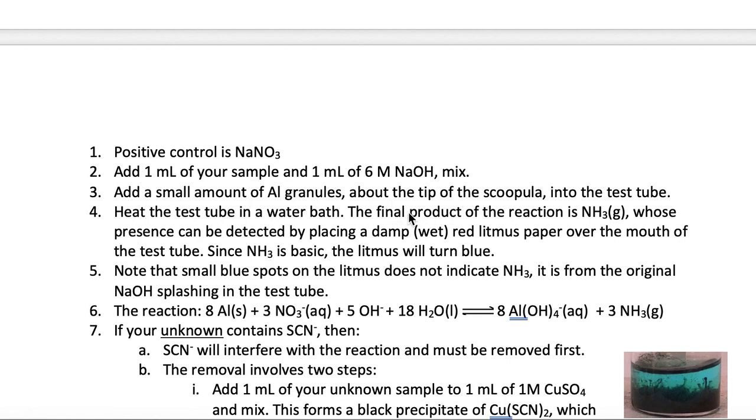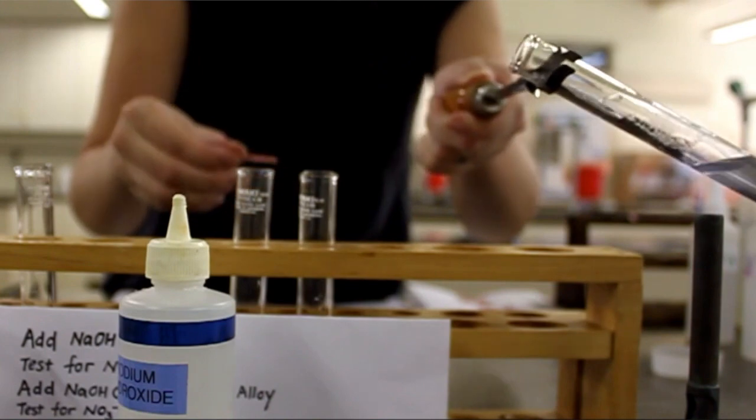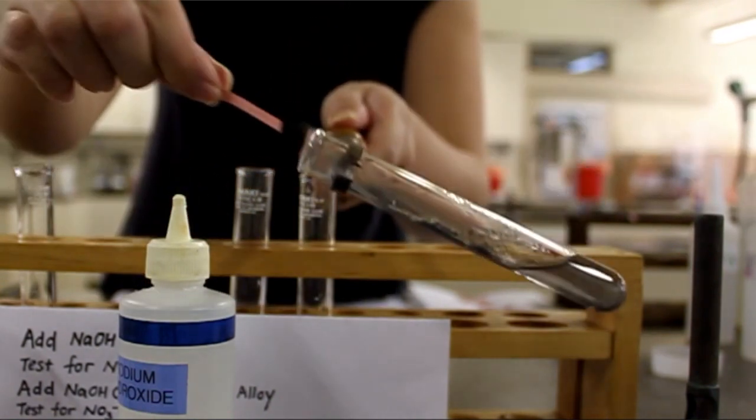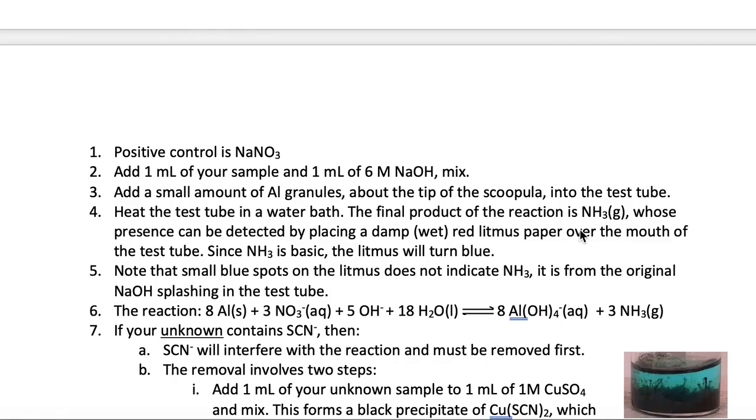While this mixture is heating in the water bath, you're going to get a red litmus paper and wet that litmus paper with water. When the mixture in the test tube is hot, you put the litmus paper over the mouth of the test tube. If nitrate is originally present in the sample, ammonia would be produced as a result of the reaction shown here.